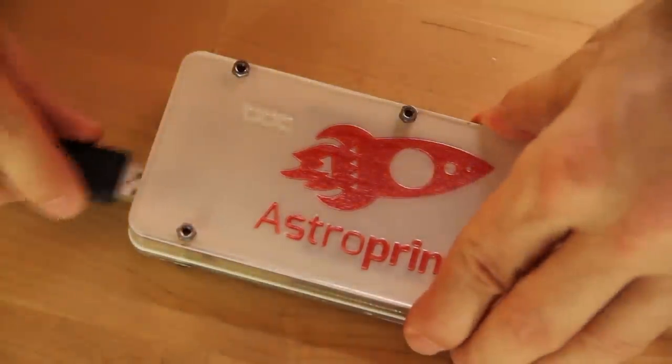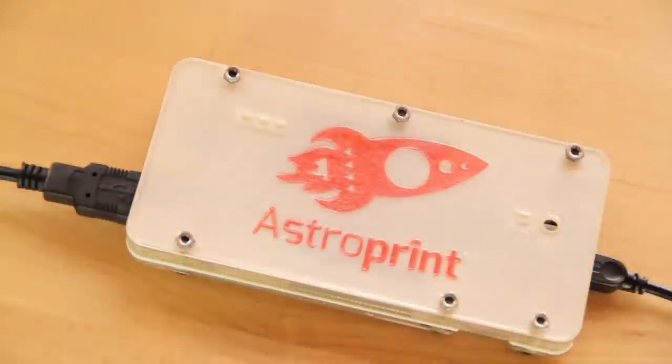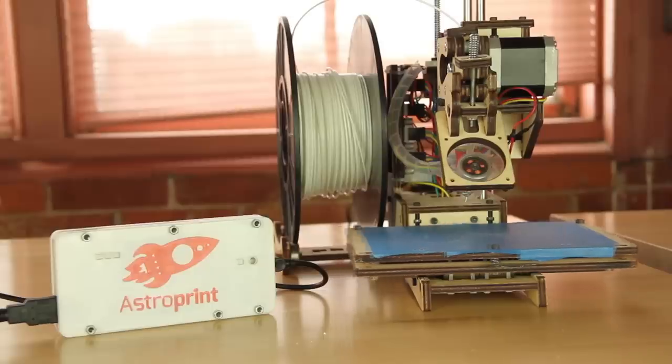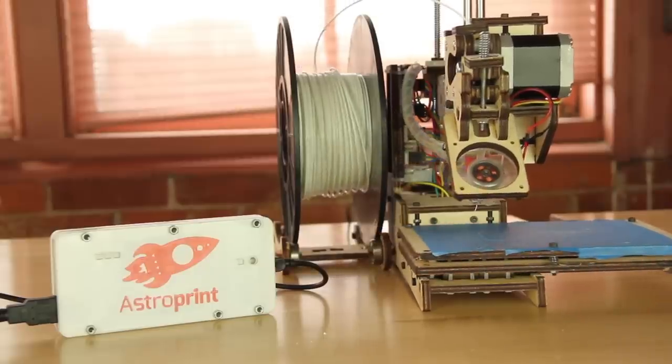Here's how it works. Just plug your printer's USB cable into the AstroBox, connect to the box via Wi-Fi, and start printing wirelessly. We made it completely plug and play.